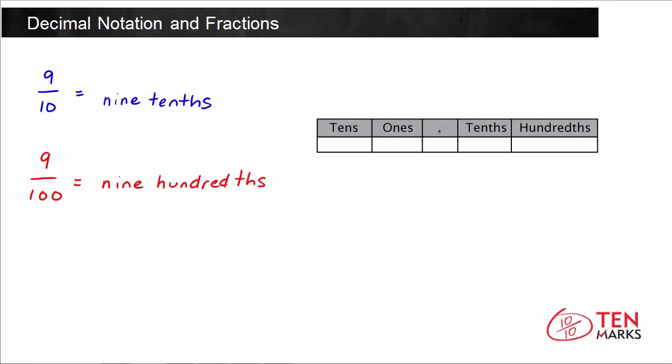Now notice here that there's a decimal point in the middle of this place value table, and then you have the place values of tenths, which represents denominators of 10, or you have hundredths, which we've showed you as a denominator out of 100.